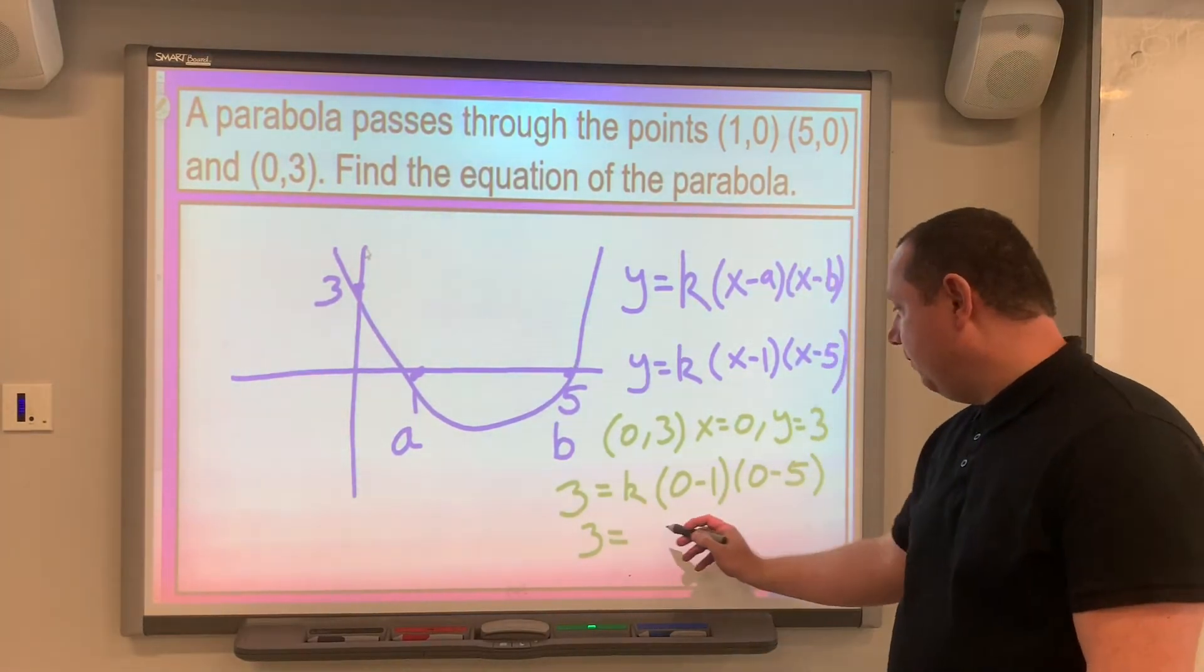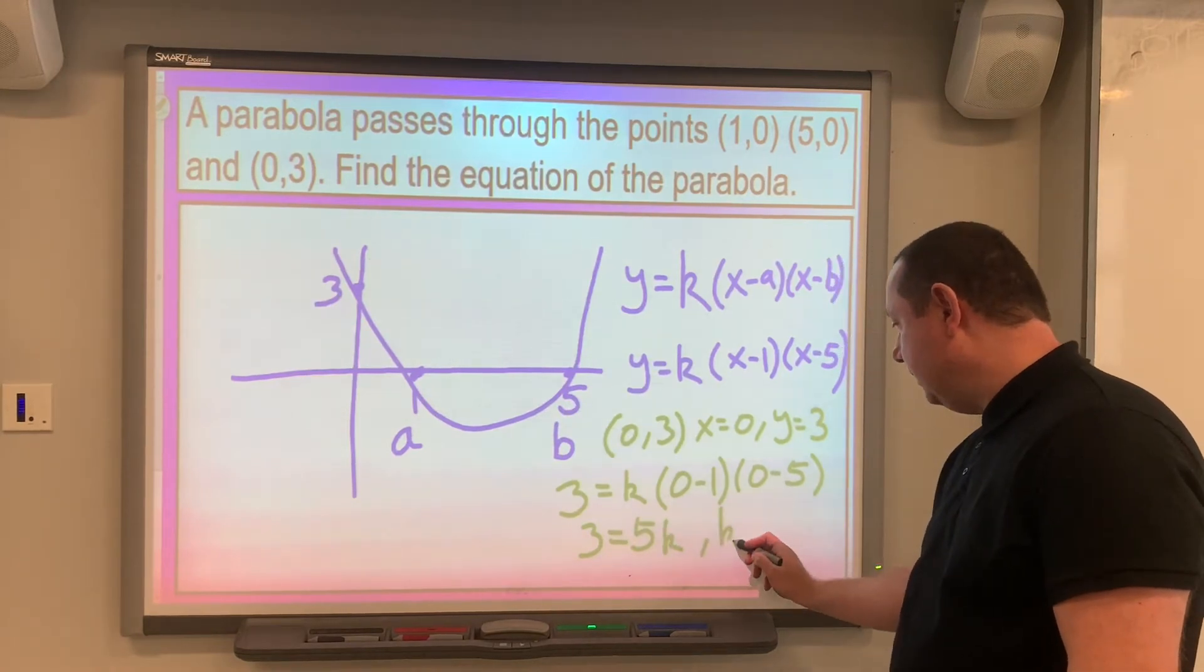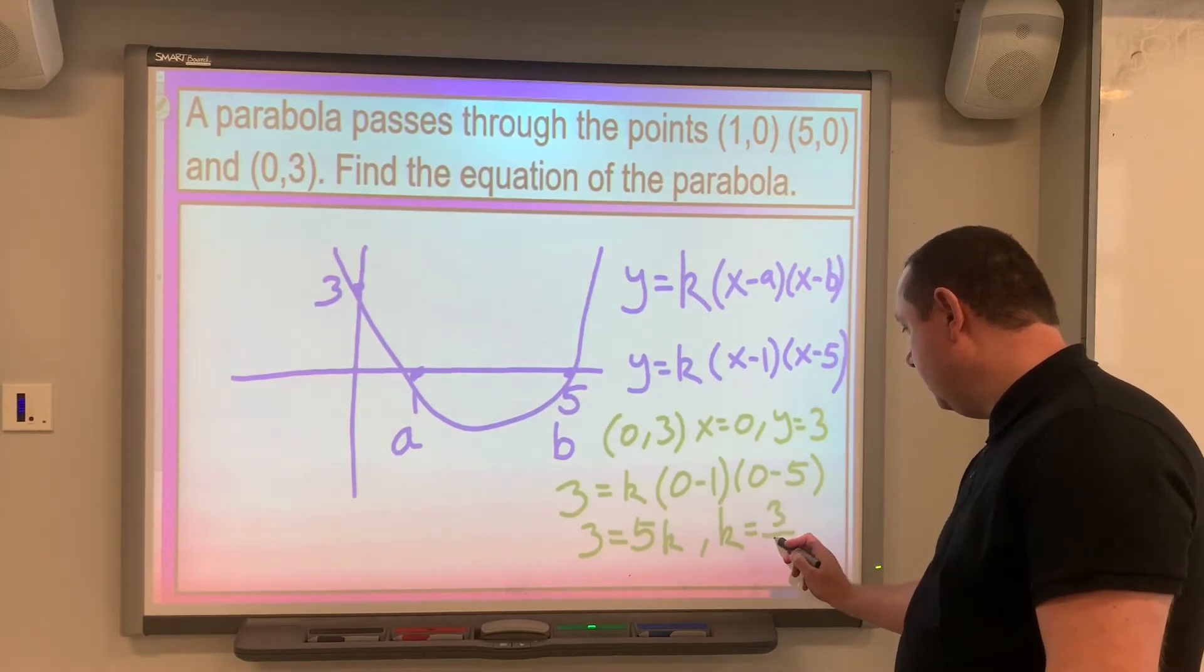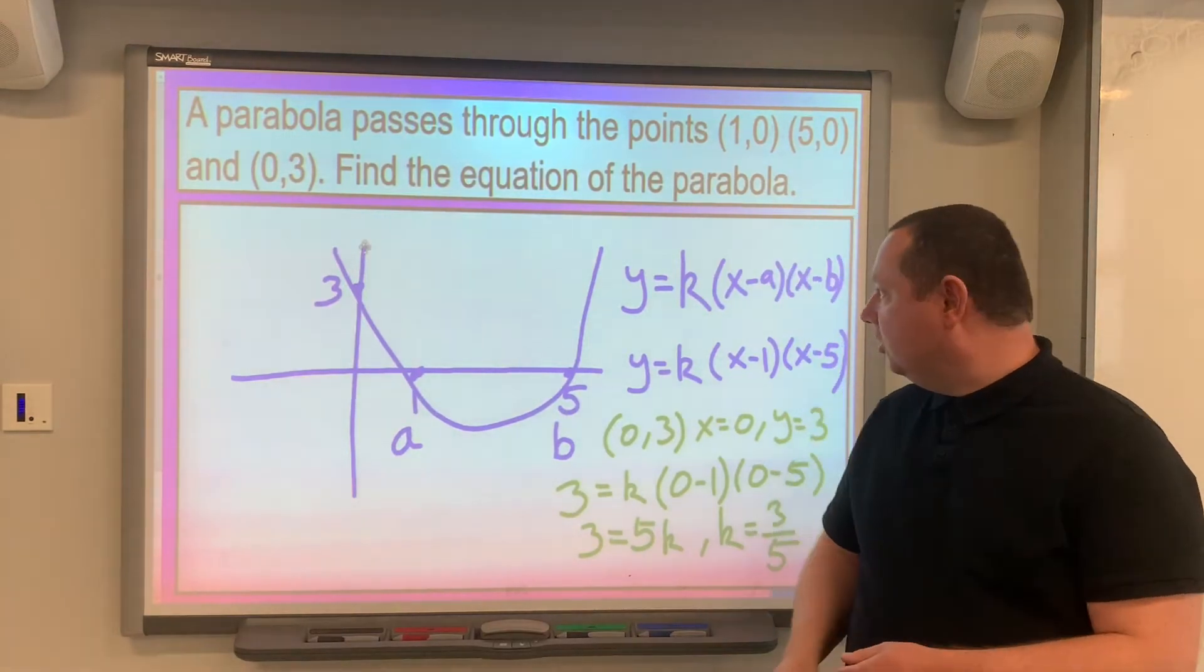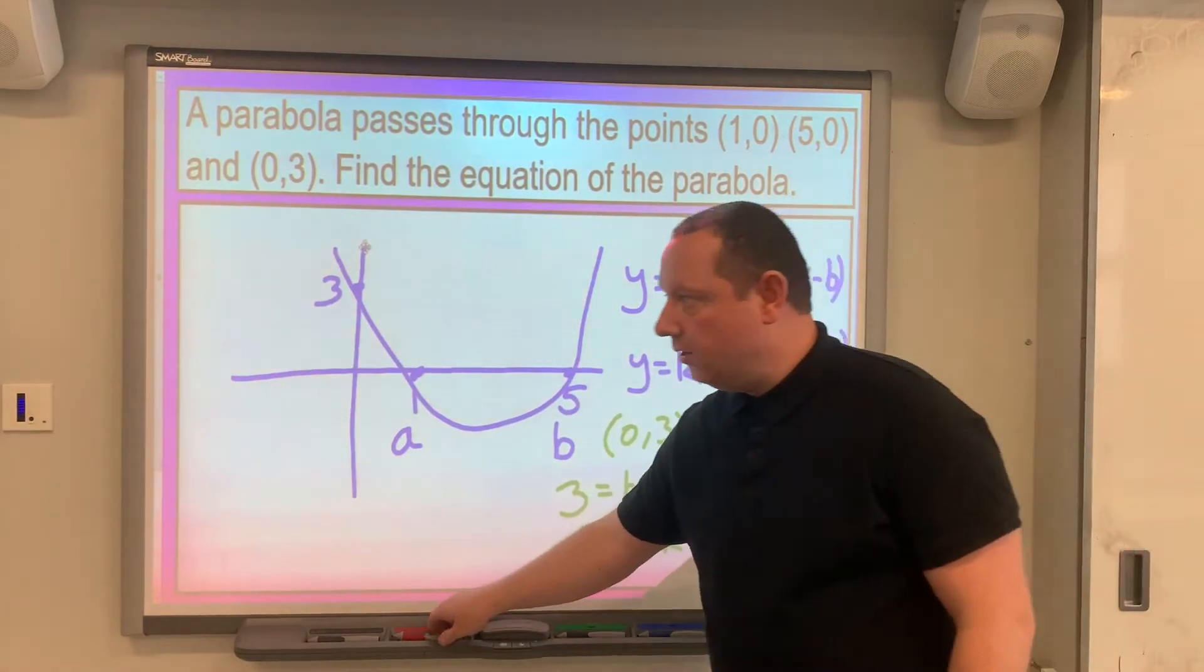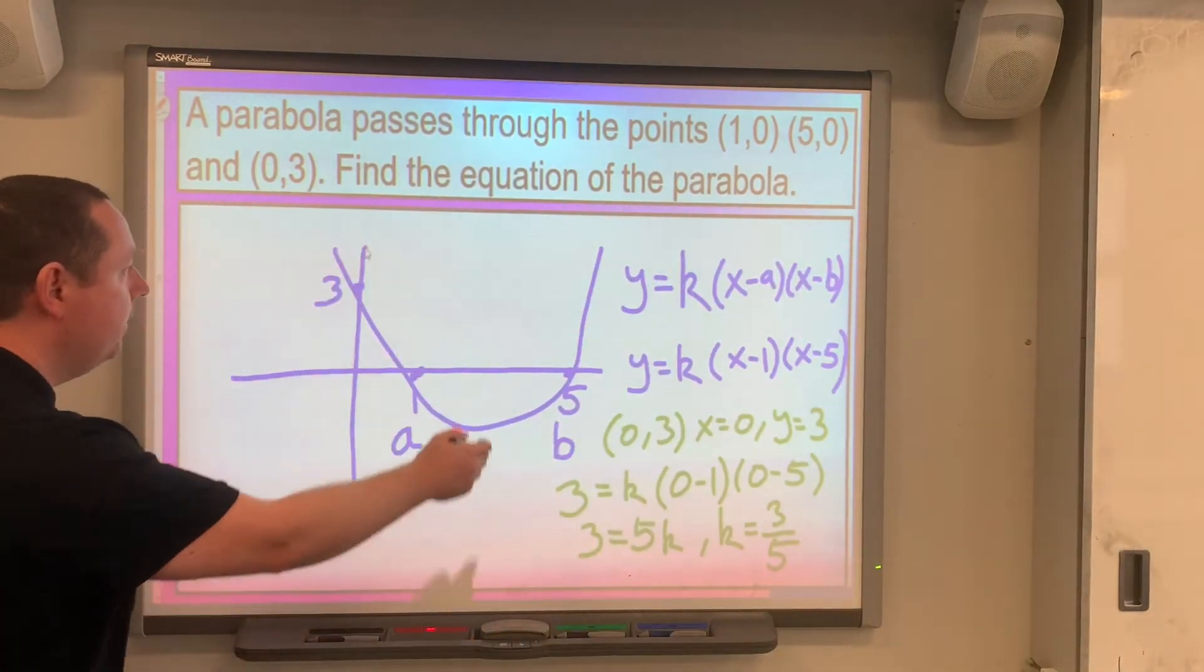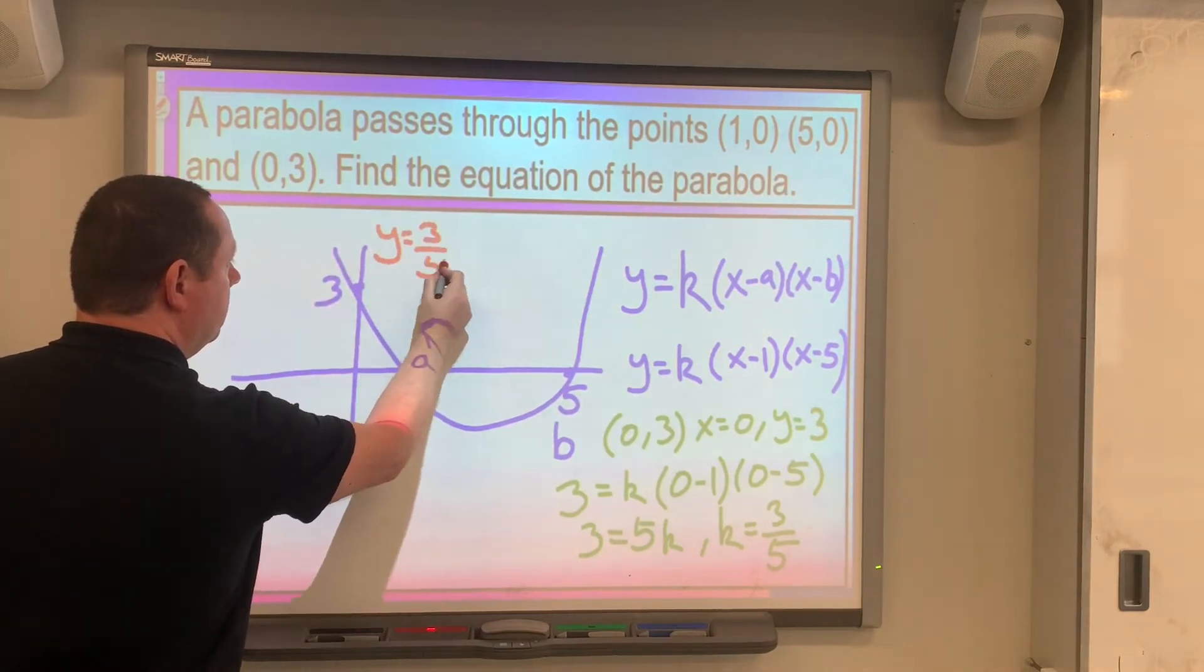That gives us 3 equals 5k, so k is simply the number 3/5. So we just substitute that back into our equation and we have the equation of the parabola. So the final answer is y equals 3/5 times (x minus 1)(x minus 5), and we're done.